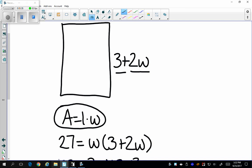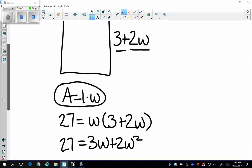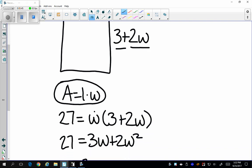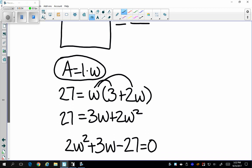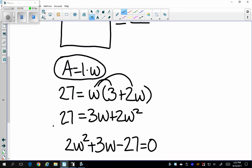So I get 27 equals w times 3 plus 2w. All I'm doing is distributing the w to 3 and to 2w to get 27 equals 3w plus 2w squared. I'm setting each side equal to 0. I'm subtracting 27 from each side and just rearranging it a little bit nicer.